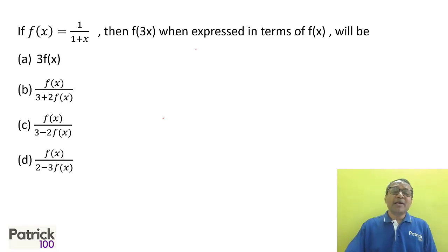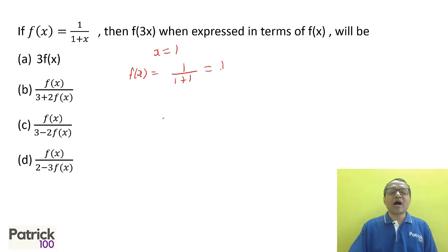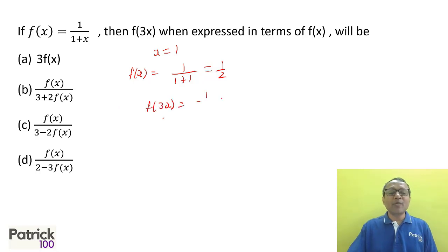I normally recommend: take values. Say x = 1, so f(x) = 1/(1+1) = 1/2. Now what should f(3x) be? f(3) = 1/(1+3) = 1/4. So we need to see which option gives you 1/4.